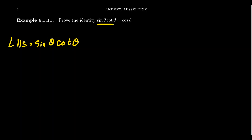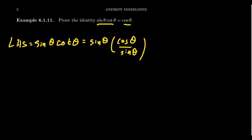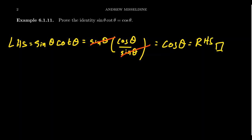So what can I do? The left-hand side has sine and cotangent, while the right-hand side only has cosine. I have to somehow get rid of the cotangent. What if I replace cotangent with cosine over sine — that's the ratio identity. I need to introduce cosine into the problem. Cotangent has cosine in the numerator, and then there's a sine in the numerator that cancels with the sine in the denominator — an algebraic simplification. It then simplifies to cosine, which is the right-hand side. I like to write 'right-hand side' there and put a little square to indicate the proof is done.